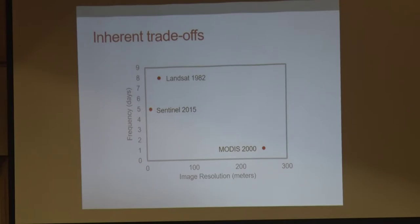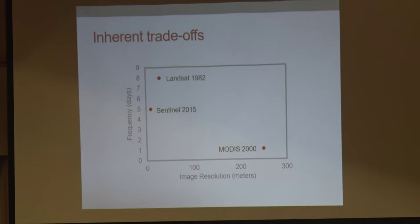MODIS is one we use a lot in the products we generate. One of the reasons we like it so much is temporal frequency — you're essentially getting two images a day, so you can filter out a lot of clouds and find a clear-sky view of your landscape during any period. We can use that to develop a near-real-time monitoring system looking for changes, and we can pick up various kinds of signals by using that temporal frequency.